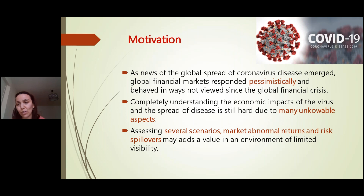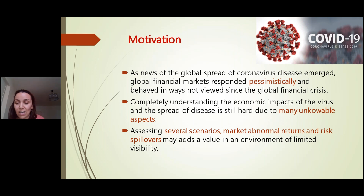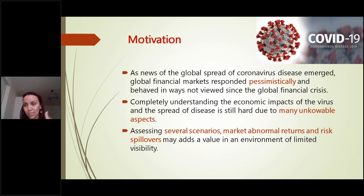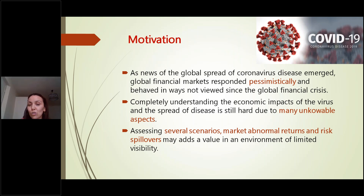It is also very useful to have information about the immediate reactions of stock markets, which would help market participants — investors and traders — to hedge or diversify their portfolios. Having information about risk transmission among several stock markets would help regulators and policy makers to implement decoupling policies by insulating major risk transmitters. This would help add value in an environment with a dark outlook and very weak visibility.